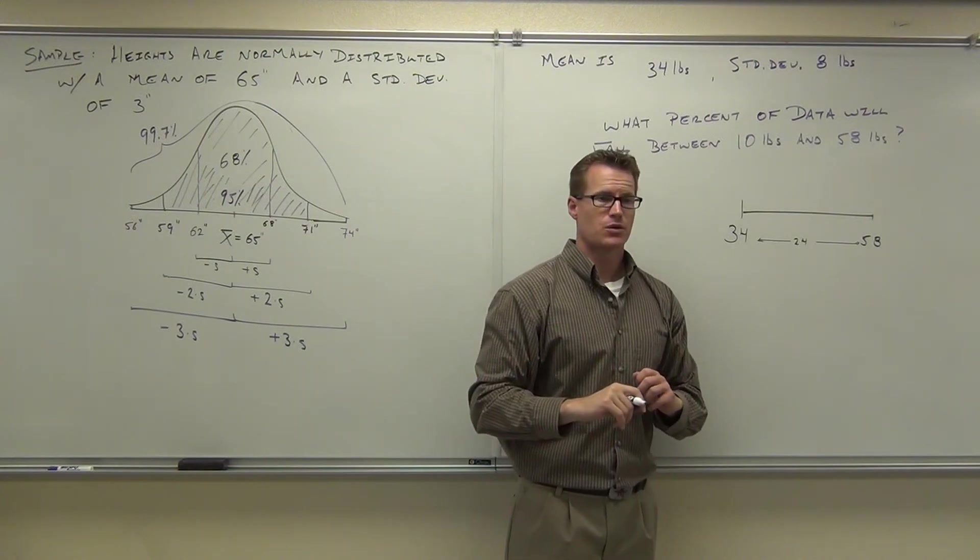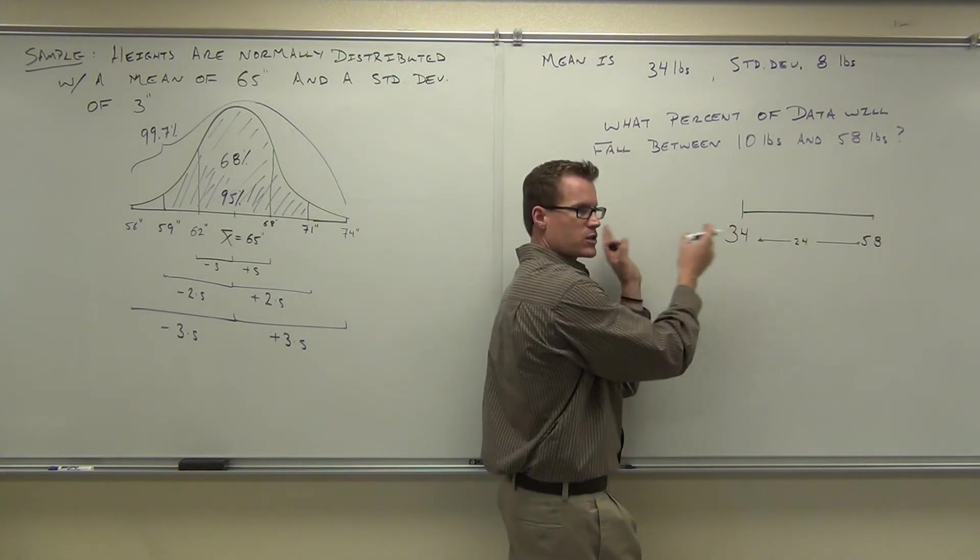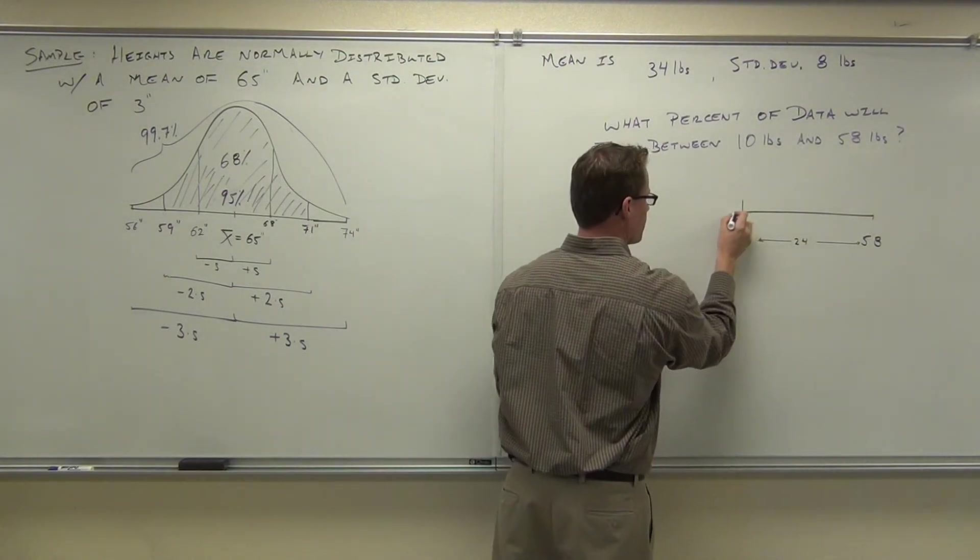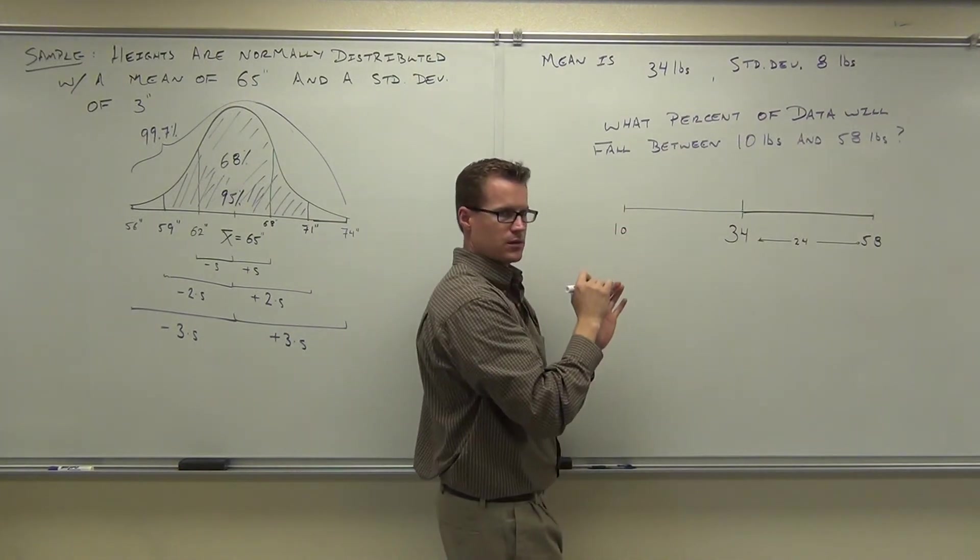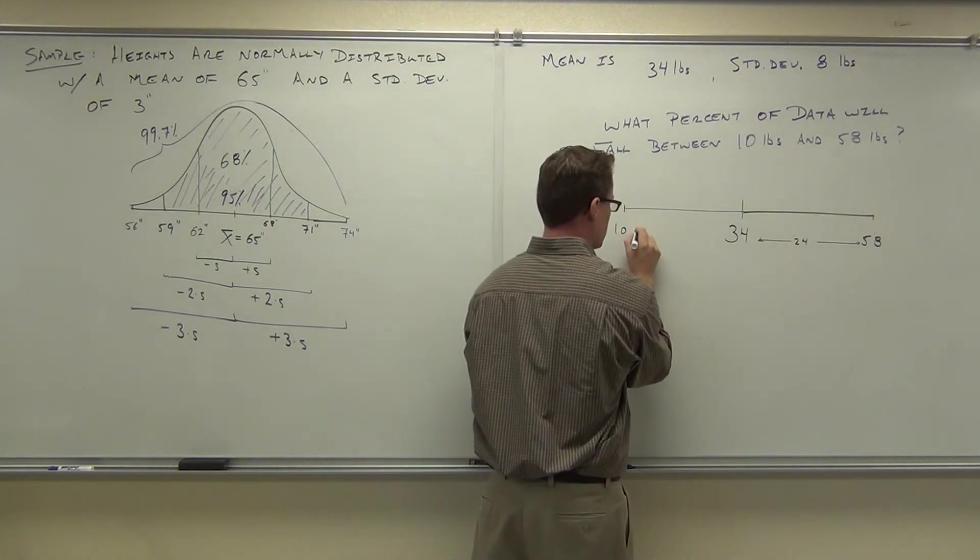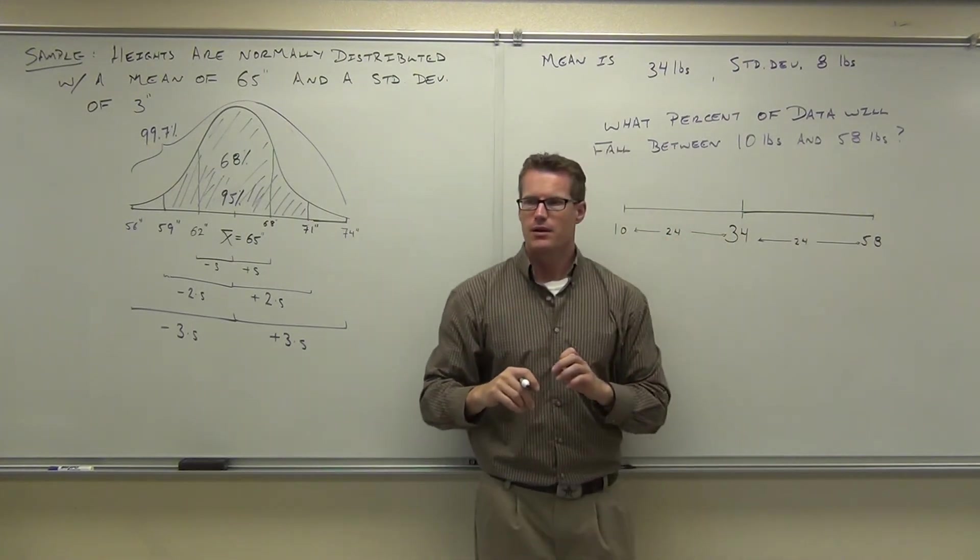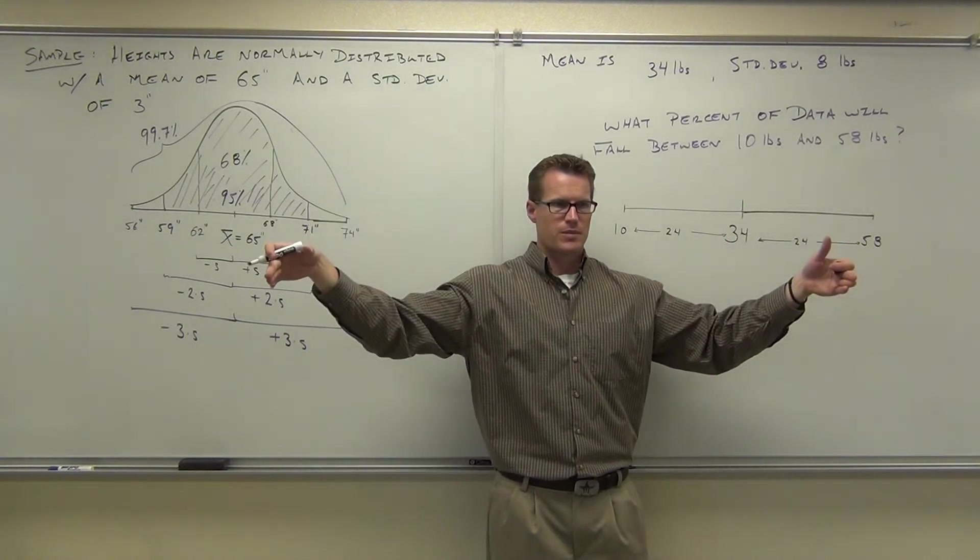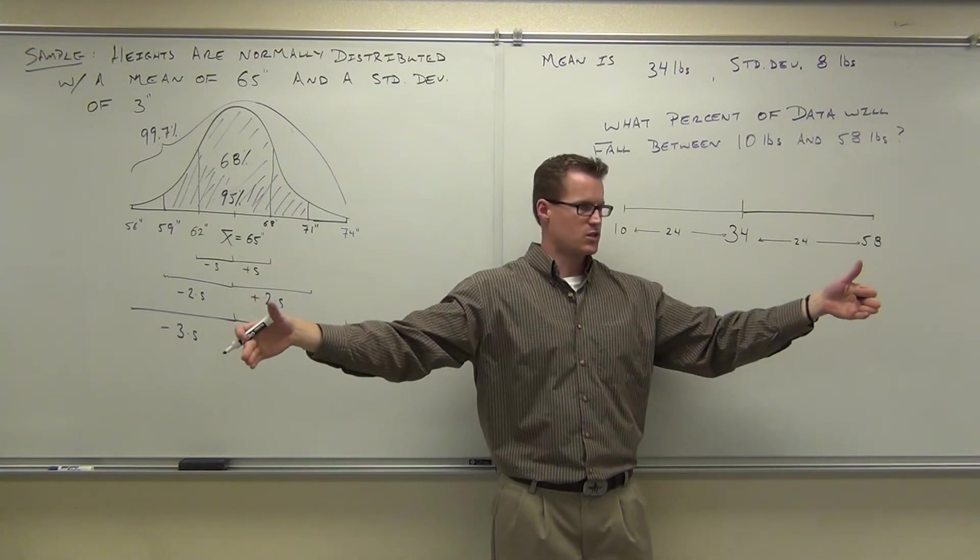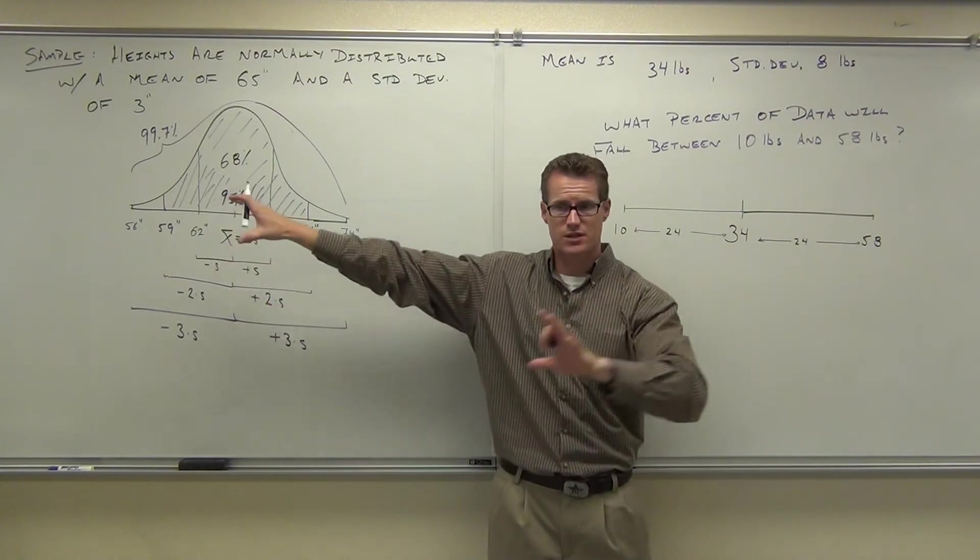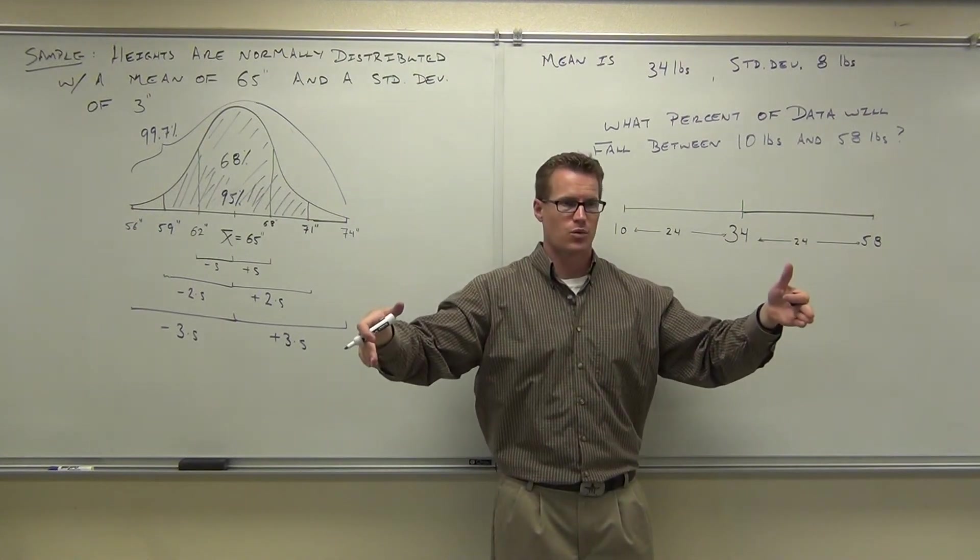Okay. Now, I want you to take your 34 minus your 10. Because 34 is here, 10 is obviously to the left. I want you to find the distance there. What's the difference between 34 and 10? So would you say that these are equidistant from the mean? So this is centered around the mean, right? And we're assuming this is a normal distribution. So this falls into this empirical rule category. It's centered around the mean. It's normally distributed. Therefore, we can use empirical rule.